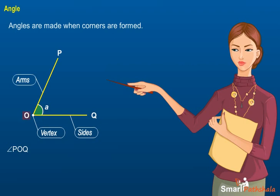In specifying the angle, the vertex is always written as the middle letter.